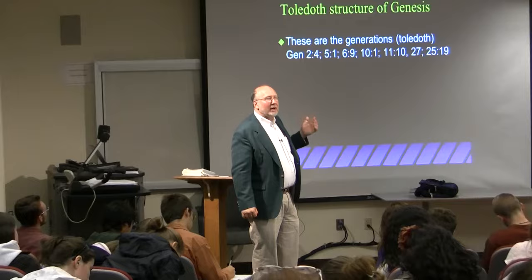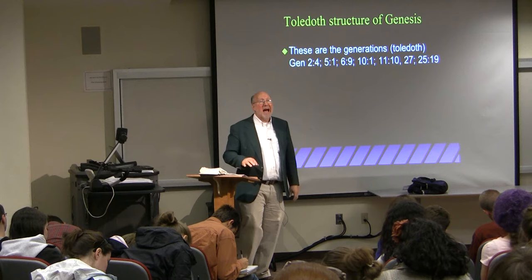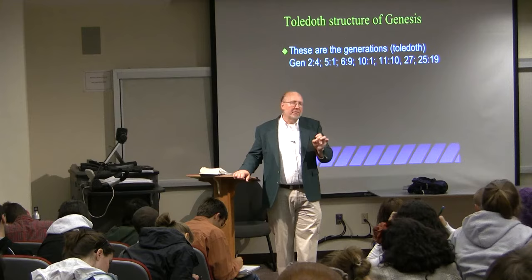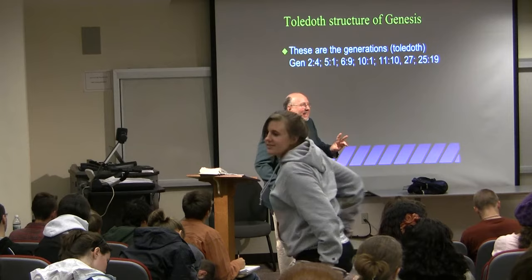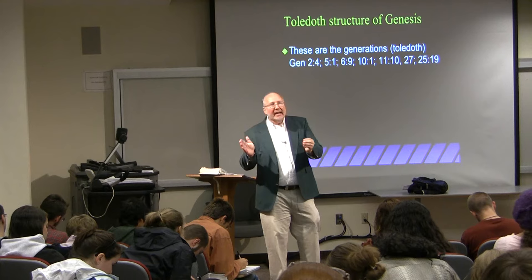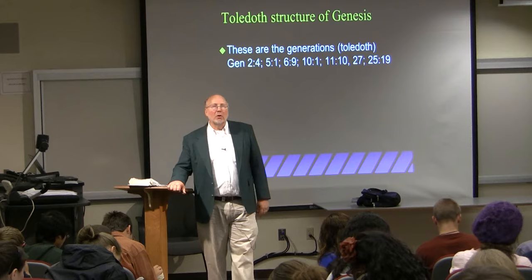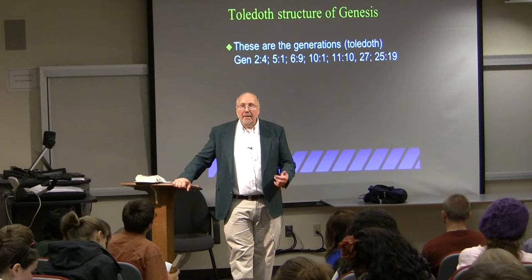This is the Toledote structure of Genesis. Toledote means 'these are the generations of' — translated in King James as such, NIV as 'this is the account of.' In Genesis chapter 2 verse 4, you've got one of these Toledotes: 'this is the account of the heavens and the earth when they were created.' What you find is there are ten Toledotes in the book of Genesis — so Genesis is broken up into ten sections based on this phrase. This is how Moses breaks his own book up. By the way, if you went up to Moses and said, 'Moses, how many chapters are in Genesis?' — would Moses know? There were no chapters back then. Do you realize your Bible's chapters were added about 1200 AD?